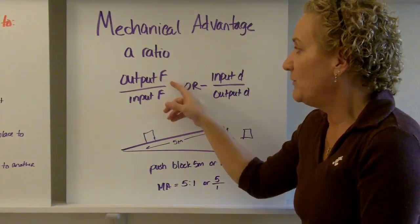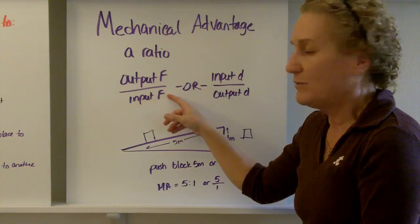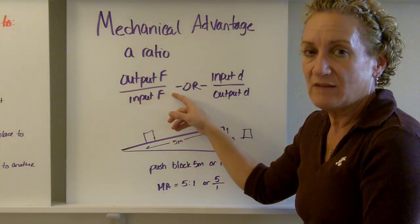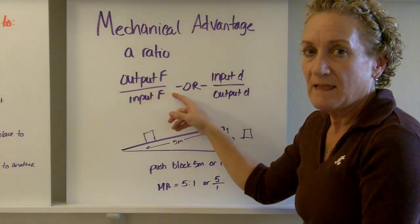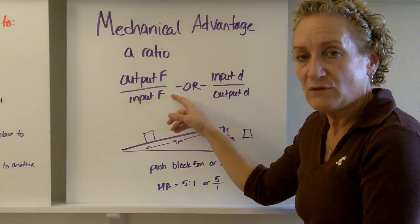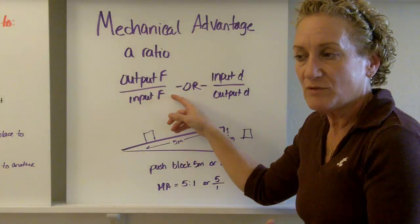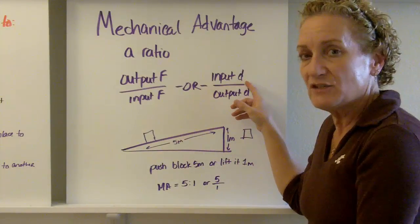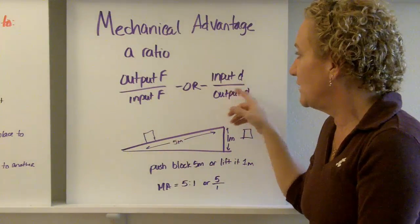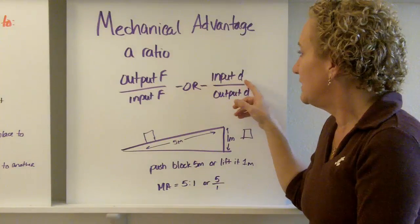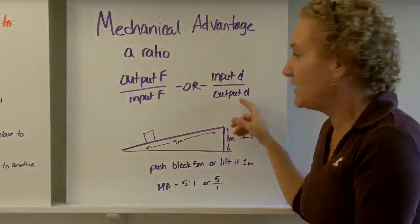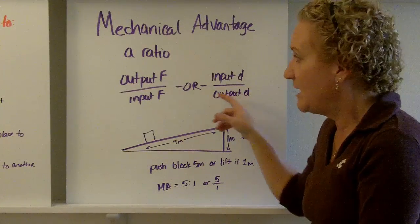So, how do you calculate it? Well, it's the output force to the input force, or the output force divided by the input force, if you want to say it that way. Sometimes it's hard to measure force. It's hard to wrap our arms around it or to figure out what that force is. Sometimes it's easier to measure distance, so we can do the inverse, the input distance divided by the output distance, or the ratio of the input distance to the output distance.